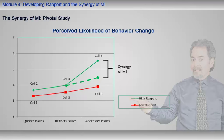What this all means is the following. If you consider the impact of high rapport on behavior change to be a 1, and the impact of reflecting and addressing the issue to be a 1, then you would expect that when you reflected and addressed the issue with high rapport, 1 plus 1 would equal 2. In reality, we found that when both things were done — and this is MI — 1 plus 1 equals 6. Put another way, there is a 6-fold greater increase in the impact of using MI than if you only created high rapport or if you only reflected and addressed the issue. That's powerful.